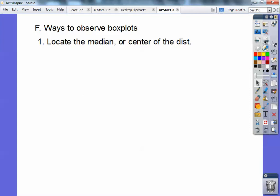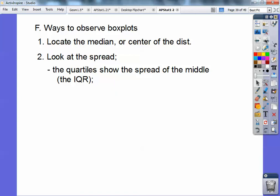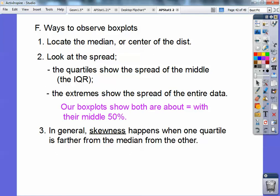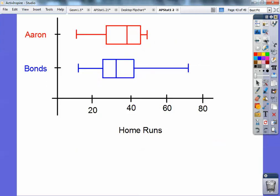So ways to observe the box plots. Locate the median or the center of the distribution. Look at the spread. And the quartiles show the spread of the middle interquartile range. So the extremes show the spread of the entire data. Our box plots show that both are about equal with their middle 50%. And then in general, skewness happens when one quartile is farther from the median than the other. Let's take a look at this right here.